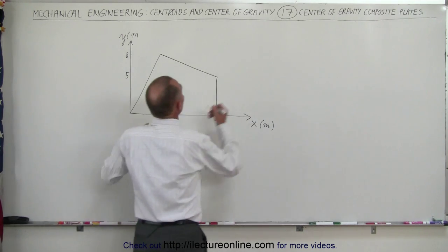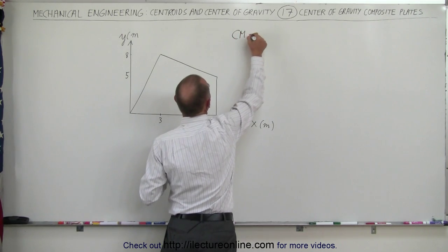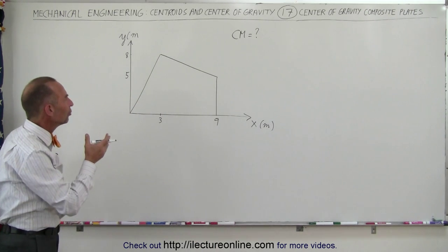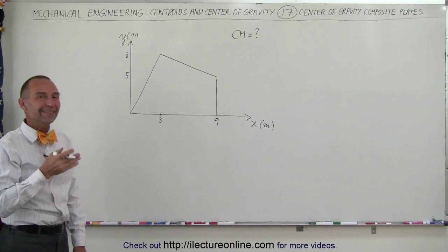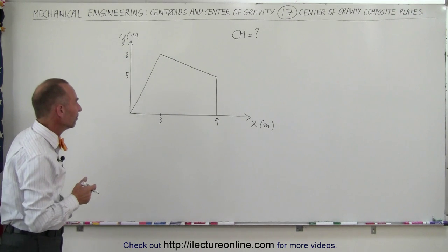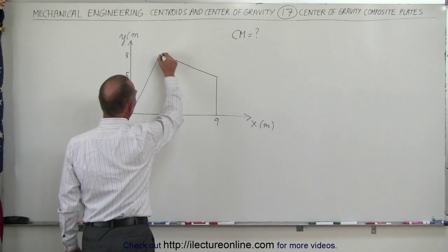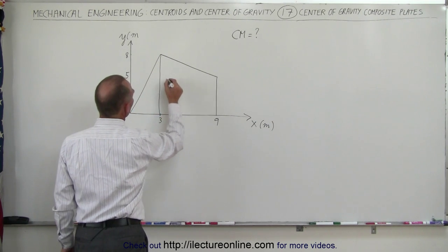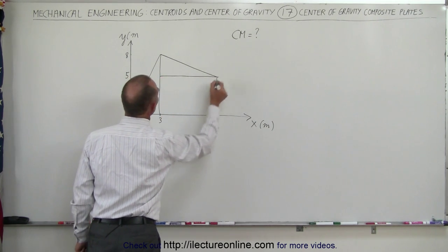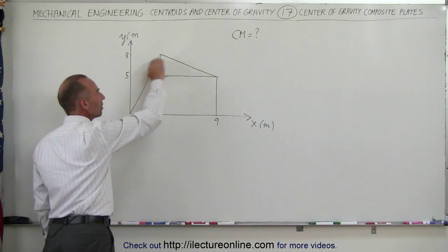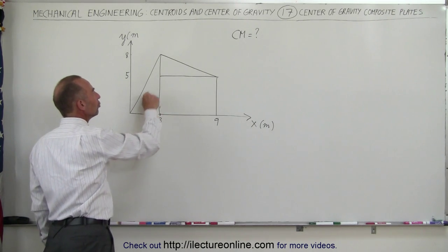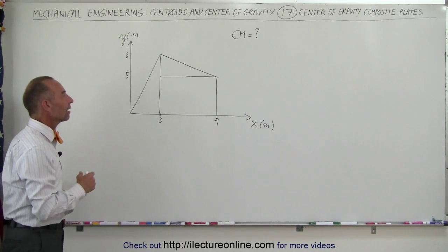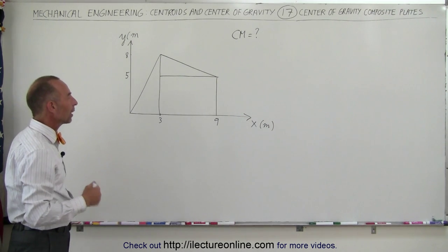The objective is to find the center of mass of this particular object — CM equals question mark. What we need to do is somehow divide it into shapes for which we can very easily find the center of mass. If we draw a line straight down in this direction, and then draw a line straight across, notice we have now divided the strange shape into two triangles and a rectangle, and it's relatively easier to find the center of mass of triangles and rectangles.